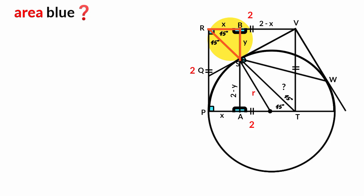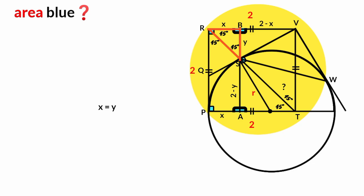Looking at this triangle, it is a right-angle triangle with one angle of 45 degrees. By the angle sum rule: 180 minus 90 minus 45 equals 45 degrees. The triangle is right-angled with two congruent angles, making it an isosceles right-angle triangle. The sides facing the congruent angles are equal, so x equals y. We can replace y with x.